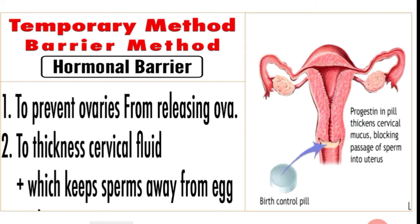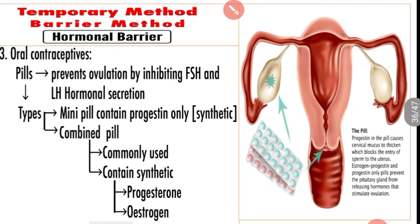The hormonal barrier involves synthetic progestin, or a combination of progesterone and estrogen, in the form of oral contraceptive pills. The mini pill contains only synthetic progesterone. The combined pill contains both synthetic progesterone and estrogen, and is the more commonly used and effective form.